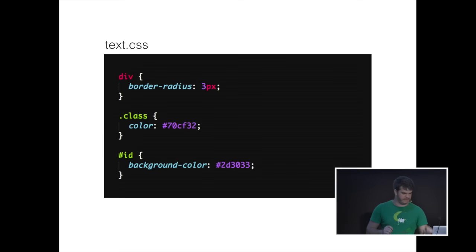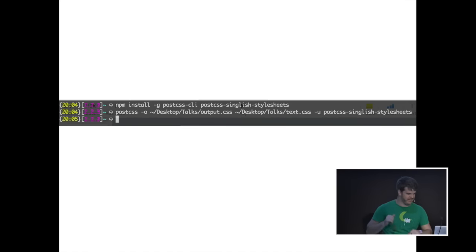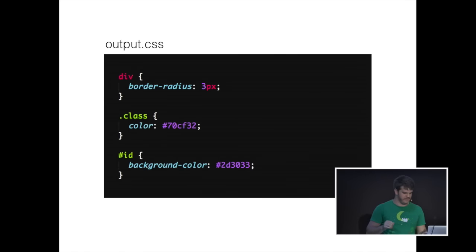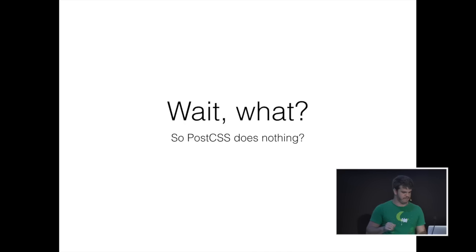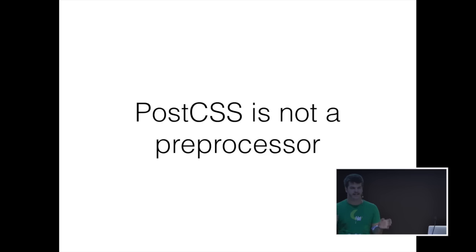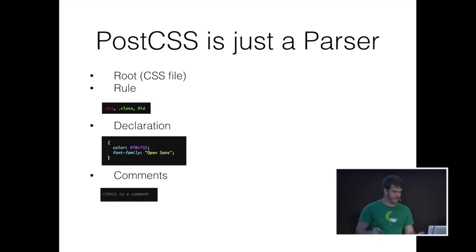I'll take an input CSS file, install PostCSS and run it. I had to include a plugin on the far right which I wrote, because you can't even run PostCSS without a plugin — it does nothing. The output is exactly the same. So what does PostCSS do? It's not a preprocessor. The main thing you hear is that it's not Sass, it's not Less, it doesn't do any of those things. But it can. It's just a parser, and it parses your CSS into a series of nodes.